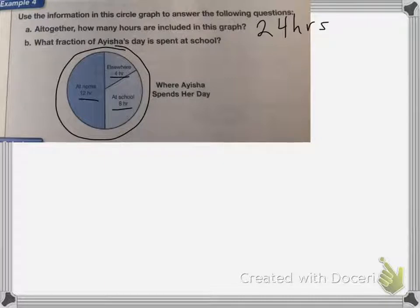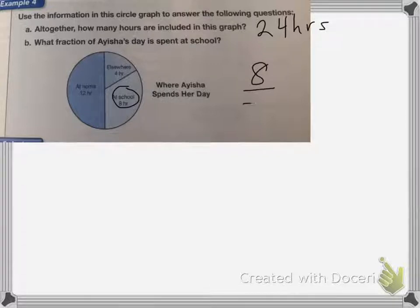The second question asks, what fraction of Alicia's day is spent in school? For this question, she spends 8 of the 24 hours at school. So her fraction is going to be 8 over the 24 total hours, which we would reduce down to one-third.